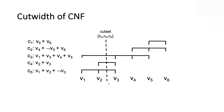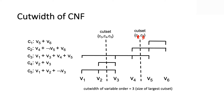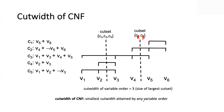You have different cut sets — five of them in this example. The cut width of a variable order is the size of the largest cut set. In this case, the largest cut set has three clauses, so the cut width is 3. The cut width of the CNF is the smallest cut width attained by any variable order. You see the pattern: the secondary structure is a variable order, and there are n-factorial of them, each with its own cut width.